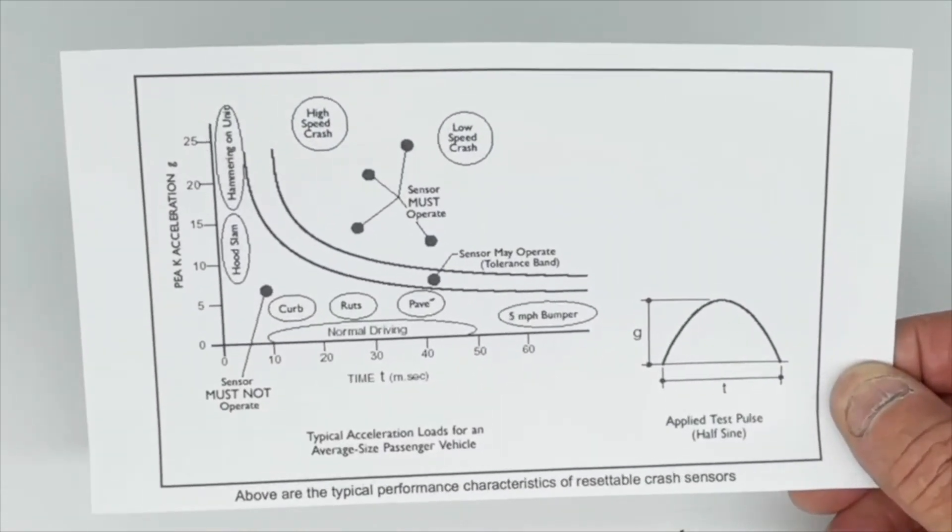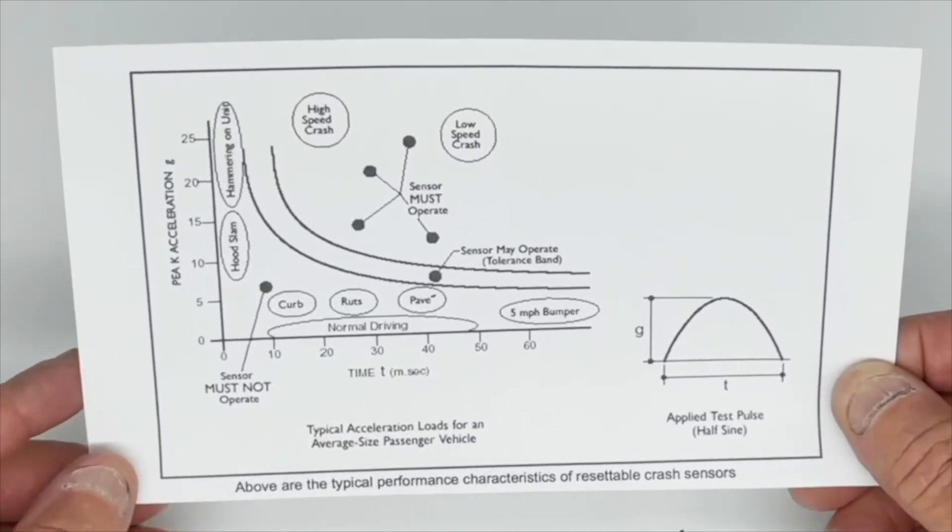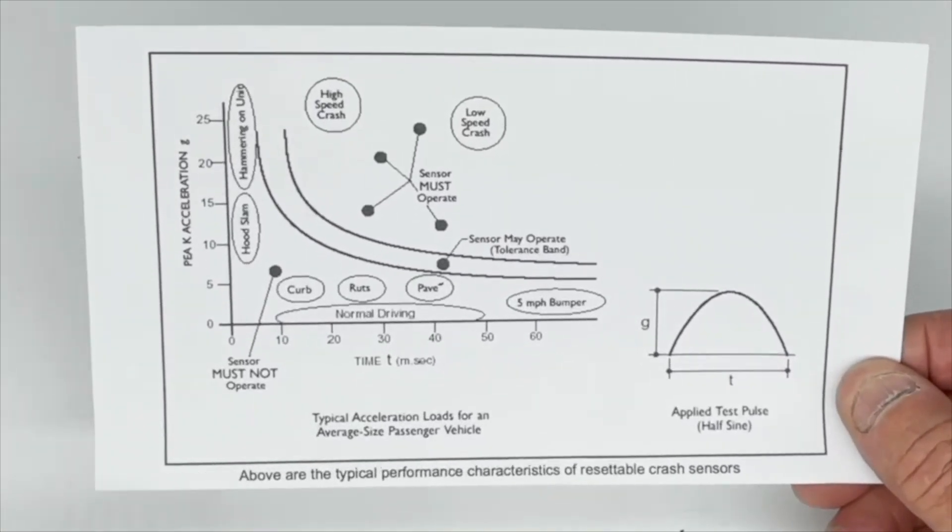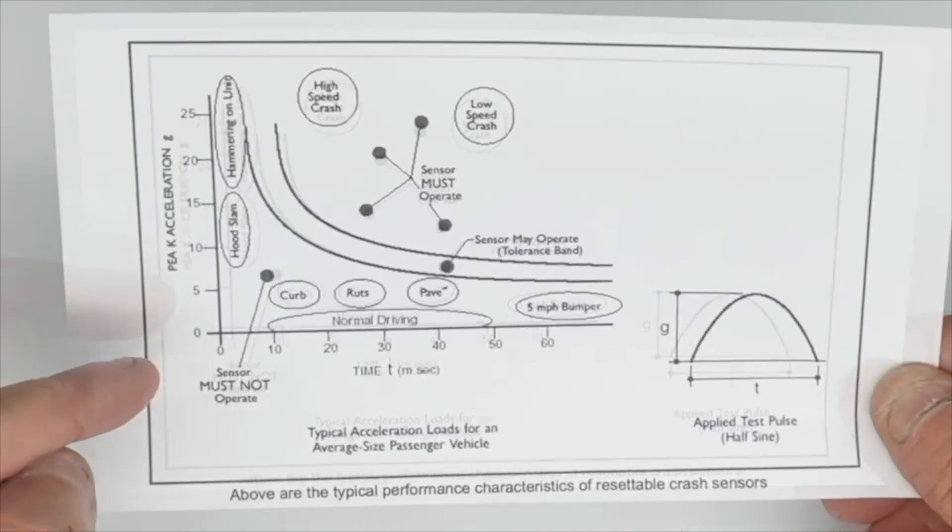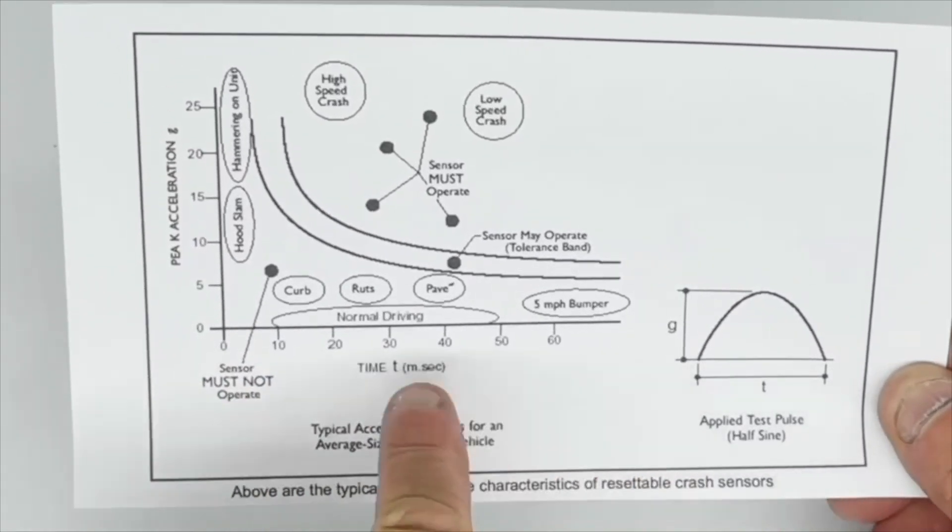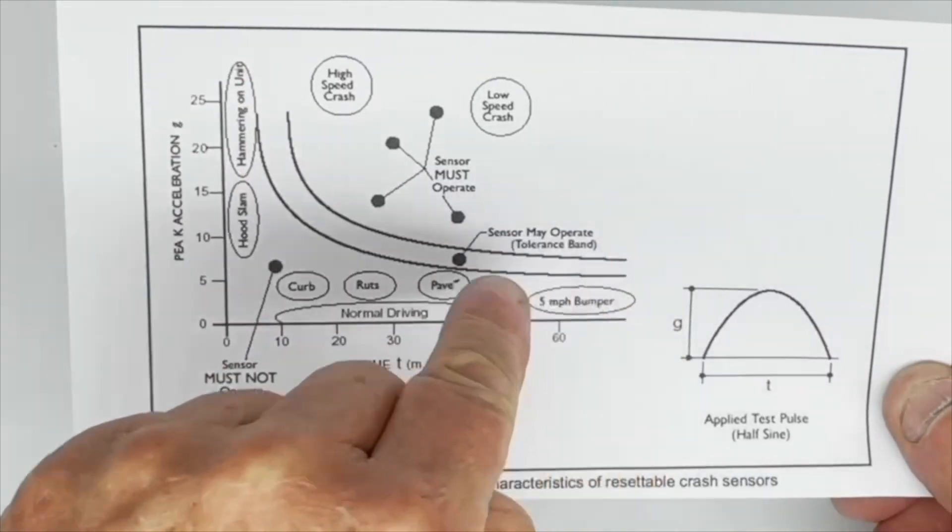Getting a little more technical, you can find this diagram in our online listing which is a graph showing the operating criteria of the switch. On this side it's acceleration or deceleration, and along the bottom it's time. This is the curve for the operation of the switch.